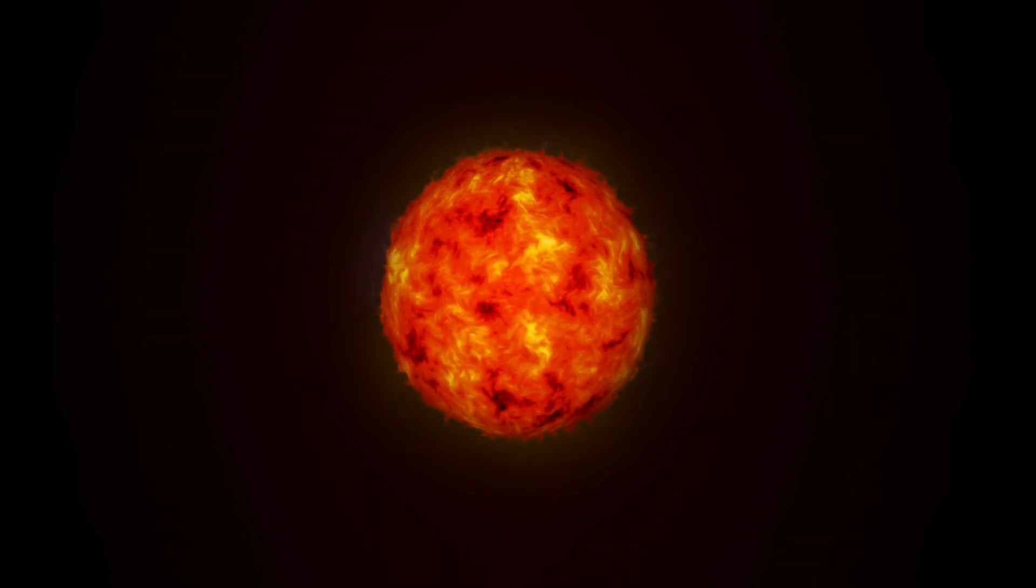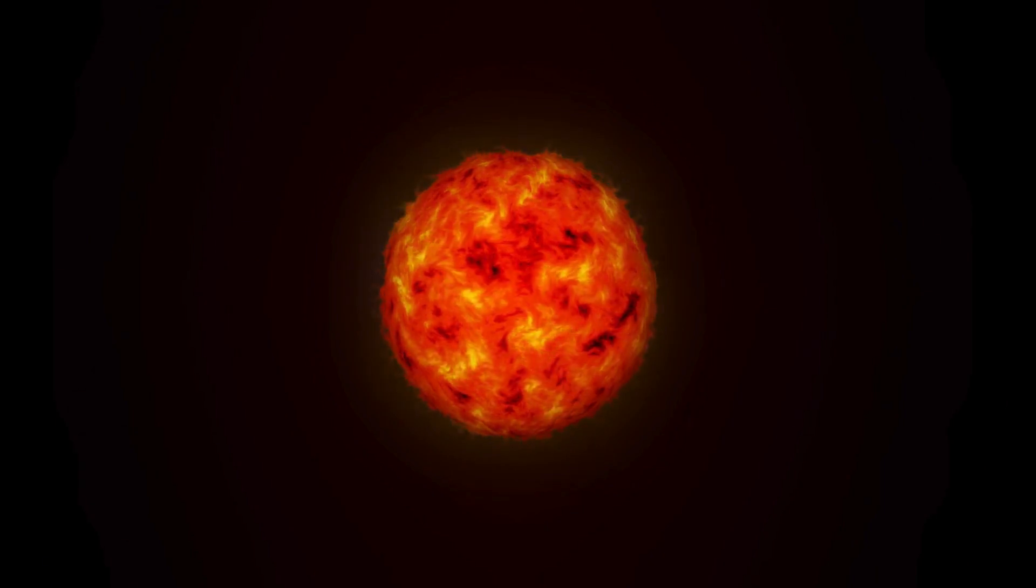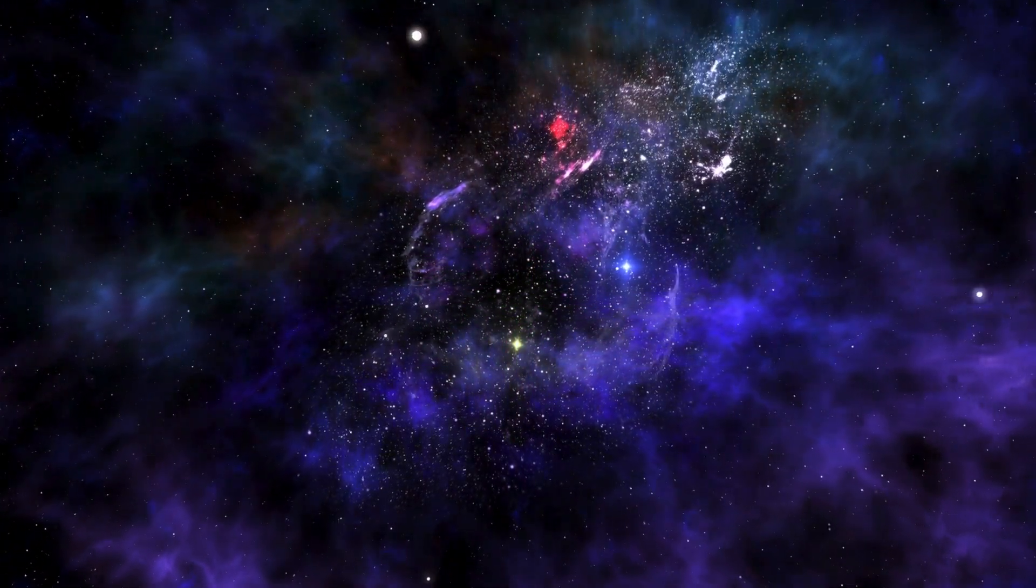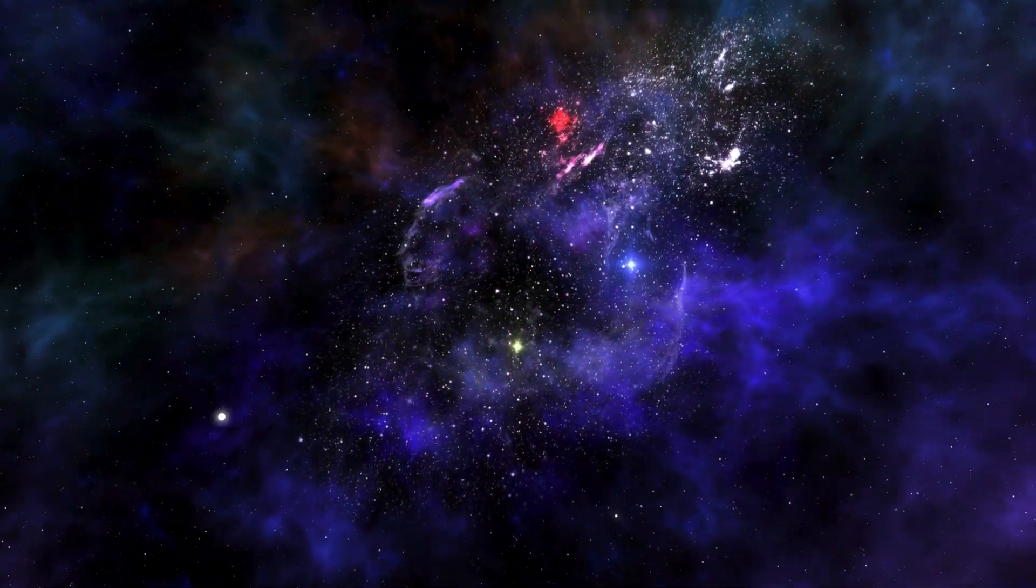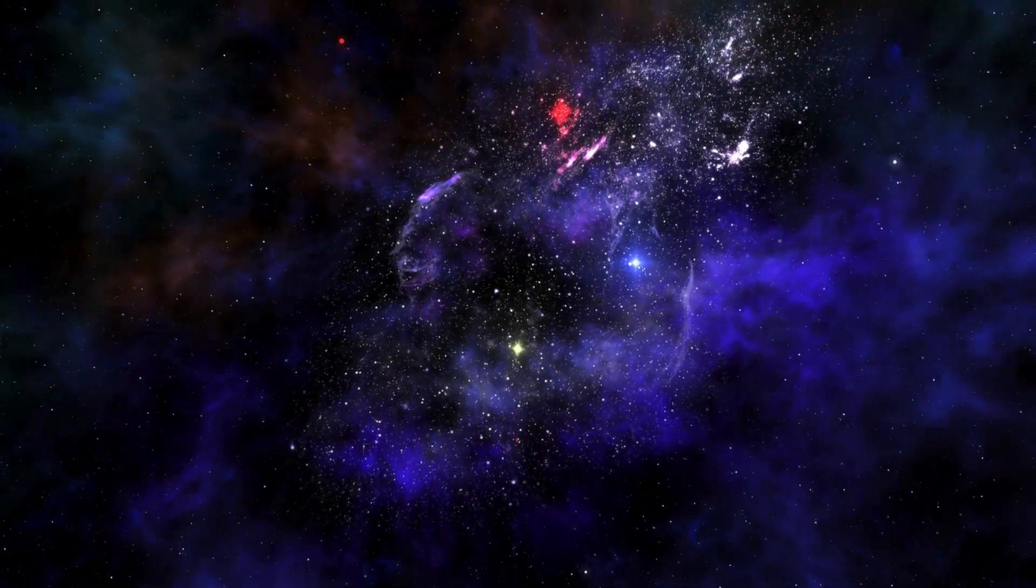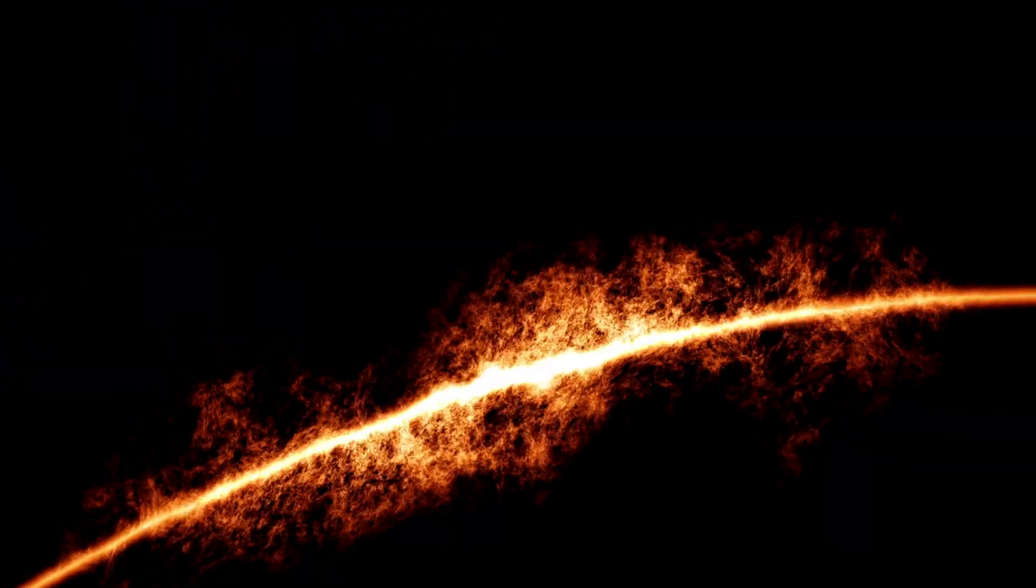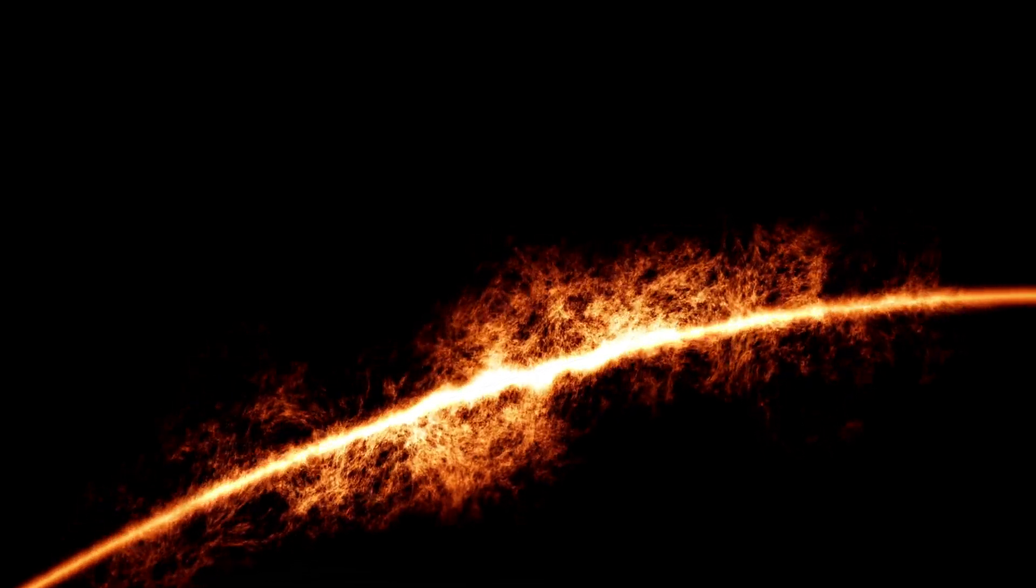Our Sun is about 4.6 billion years old. And since stars like our Sun burn for about 9 to 10 billion years, our Sun is roughly halfway through its life. But don't worry, it still has about 5 billion years ahead of it.